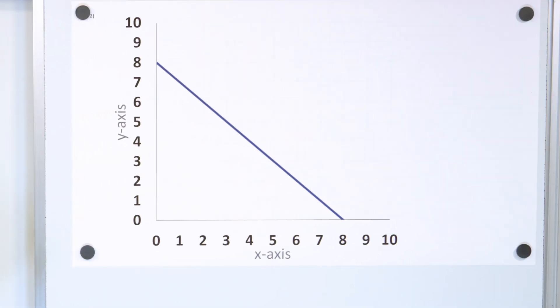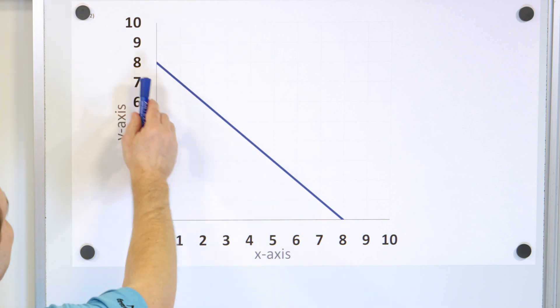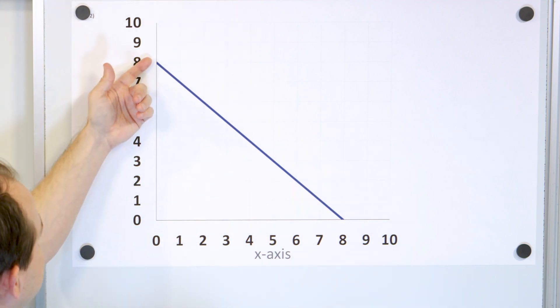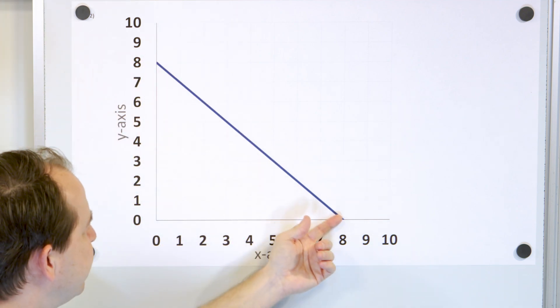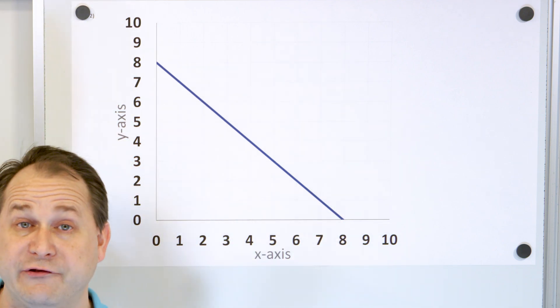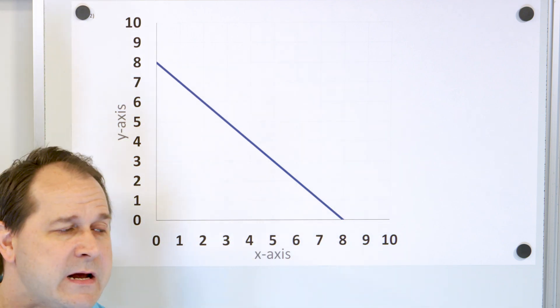So let's take a look at the first problem. Here is a graph. Nothing's really labeled, but I do know that the graph goes through these points. Here's x, here's y, and I want you to tell me what is the equation of this line.